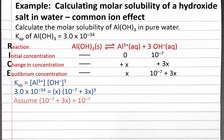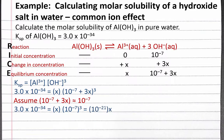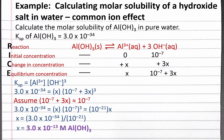Let's assume that 3x is small compared to 10 to the negative 7, so we replace 10 to the negative 7 plus 3x with just 10 to the negative 7 in our equilibrium constant expression. Cubing 10 to the negative 7 gives 10 to the negative 21. Dividing both sides by 10 to the negative 21, x equals 3.0 times 10 to the negative 13 molar aluminum hydroxide.